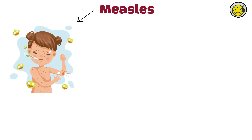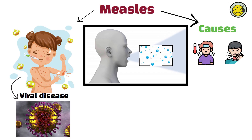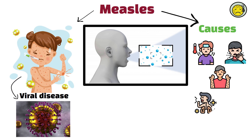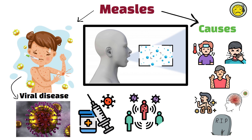Measles, ongoing. Measles is a highly contagious viral disease caused by the measles virus. Transmitted through respiratory droplets, measles causes fever, cough, and a characteristic rash. Complications can include pneumonia, encephalitis, and death. Despite the availability of a safe and effective vaccine, measles outbreaks continue to occur globally due to gaps in vaccination coverage, with an estimated 140,000 deaths in 2019.